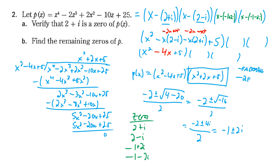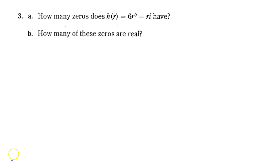That was a tough problem — the next ones aren't so tough. This one was tough because they were all complex numbers. Let's look at the next problem: how many zeros does this function have? The fundamental theorem of algebra tells us that if the degree is nine, there are nine zeros.